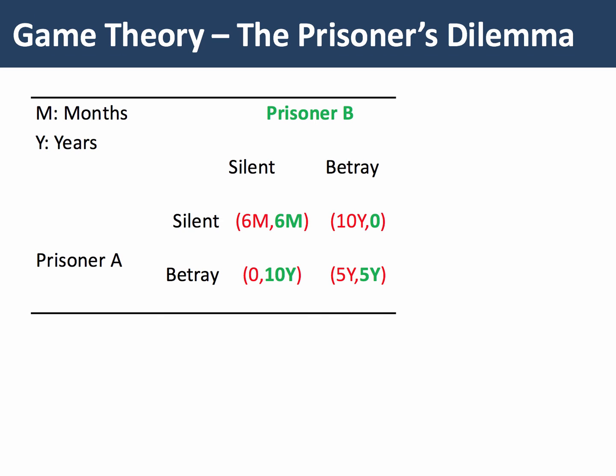In our Prisoner's Dilemma example, the dominant strategy for each player — both Player A and Player B — is to betray, in other words to confess. Because this is the course of action likely to minimize the average number of years or months they might expect to remain in prison. So the dominant strategy is to betray.